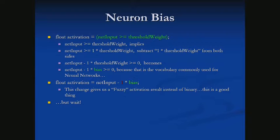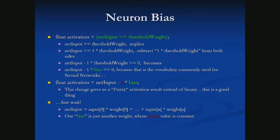Why did I put that 'one' in? Why not just do net input minus bias? It would get the same answer. I'm only putting the one in to show this idea: net input is calculated by taking each input times its weight and adding all of those together. We could include this bias portion into that equation.